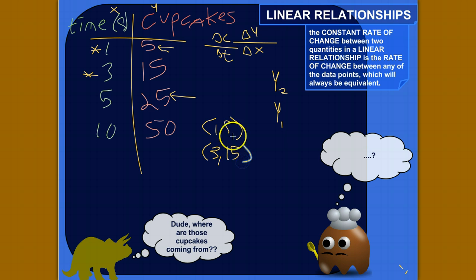So the rate of change between these two points is the change in the output variable, cupcakes—or if you want to think of it as the Y variable, what you'd plot on the Y axis—over the change in the input variable, or the X axis variable. So I would do 5 minus 15. That's the change in Y, or the change in cupcakes, over 1 minus 3.